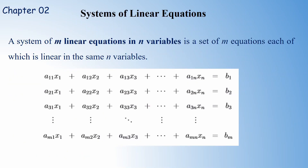Now, if you have n equations of n variables, we call this a system of linear equations. For example, in the notation the first equation is a11·x1 plus a12·x2 plus a13·x3 ... plus a1n·xn equals b1. In this notation, for the first equation the first index is always 1 — a11, a12, a13, a1n. The first index stands for the equation and the second index stands for the variable.